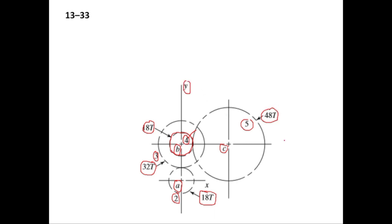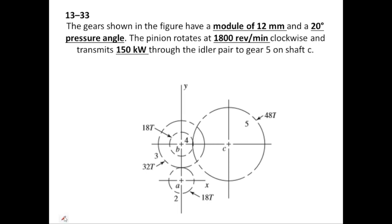This is the Y axis and this is the X axis. The module for all gears is 12 mm and the pressure angle is 20 degrees. Gear 2 on shaft A is rotating at 1800 RPM in the clockwise direction. This rotation transmits power to gear 3, then to shaft B and gear 4, which transmits power to gear 5. The transmitted power is 150 kilowatts.